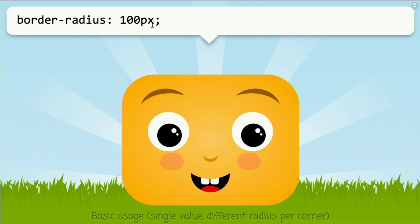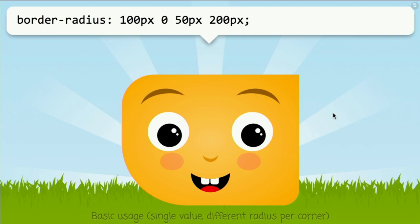Many people also know that we can specify different radii per corner — for example, by providing two values, three values, or even four values. They go clockwise starting from the top left. However, this is easy stuff.